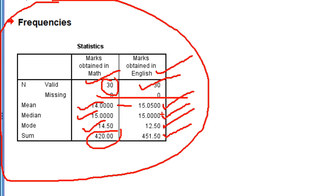The median is the same — 15 — for both subjects. Median divides the data into equal parts, so half of the students will lie below 15 and half will lie above 15. Mode is the most frequently occurring data value: 14.50 in Maths means that score was obtained by the maximum number of students. For English, the mode is 12.50. The sum of English is 451 and Maths is 420, meaning the overall score of English is higher than Maths.